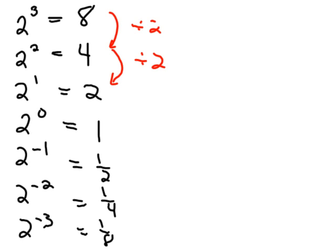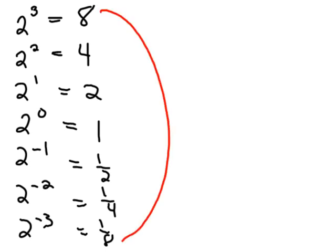So I want you to look at 2 to the 3rd and 2 to the negative 3rd, and look at how they compare. 2 squared and 2 to the negative 2. 2 to the 1st and 2 to the negative 1. If we look at those and look for a pattern, we have 8 and 1/8, 4 and 1/4, 2 and 1/2. And what are those? Reciprocals. They're reciprocals of each other.